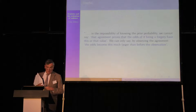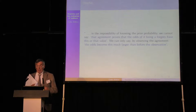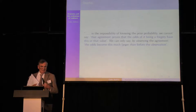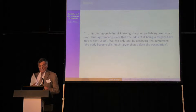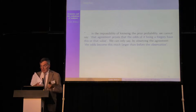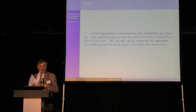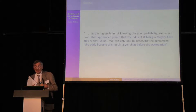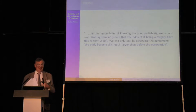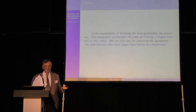This is the quote from the Dreyfus case: the impossibility of knowing the prior probability — that is, that Dreyfus was the forger. We cannot say that agreement proves that the odds of it being a forgery have this or that value. We can only say that by observing the agreement, the odds become this much larger than before the observation.